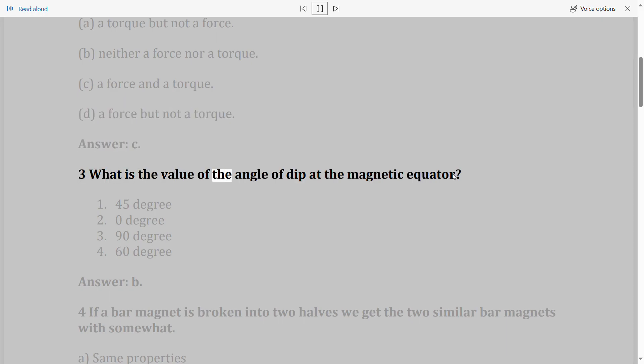Question 3: What is the value of the angle of dip at the magnetic equator? 1. 45 degree, 2. 0 degree, 3. 90 degree, 4. 60 degree. Answer: B.